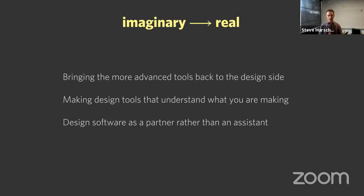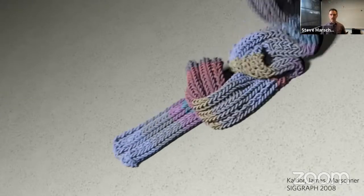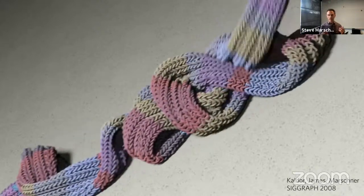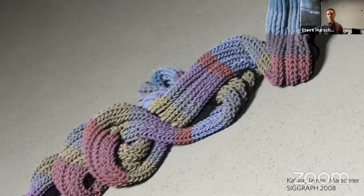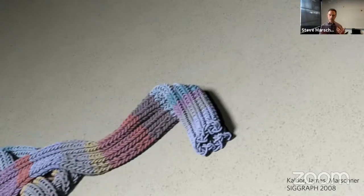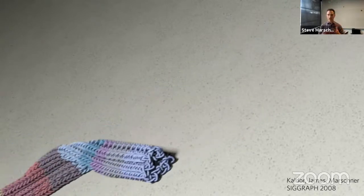Let me show some of my own work as an example. Some years ago, Doug James and I, with our student John Caldor, got to working on yarn-based simulation for graphics. This was a different way of simulating cloth because it modeled the interaction of yarns rather than just the motion of the entire sheet.